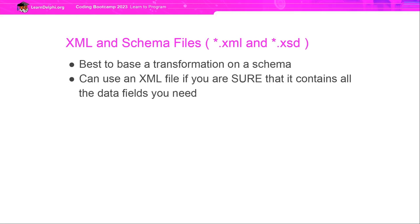The schema file will also tell you about fields that are optional, so you may have an XML file with some data missing and the schema will allow that because it knows those fields are optional. For this reason, when generating a transformation file, it's much better to base the transformation on the schema file. If you have an XML file and you're sure it contains all the data fields you'll need, it is possible to base your transformation directly on that XML file, but this isn't really the recommended route.